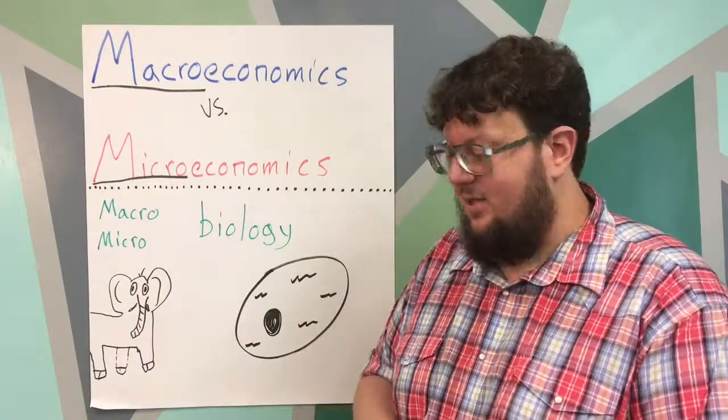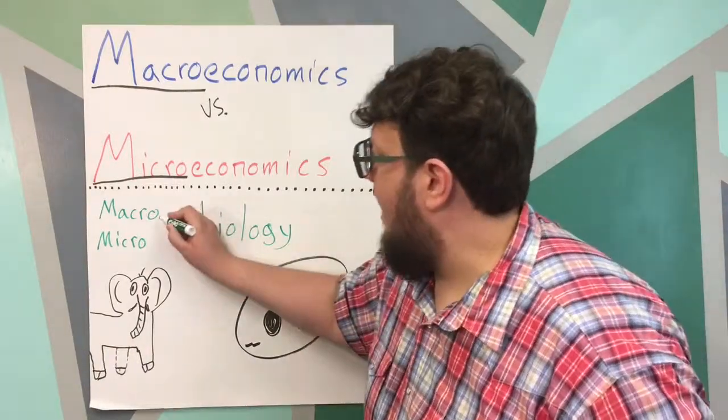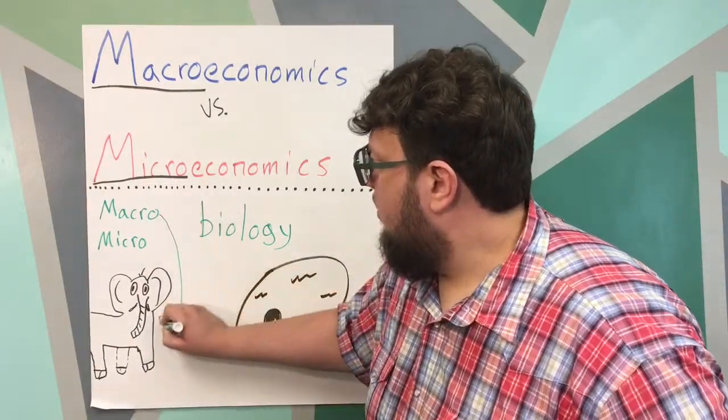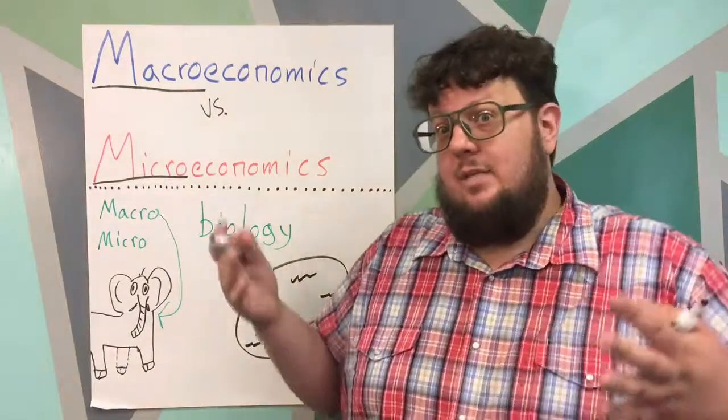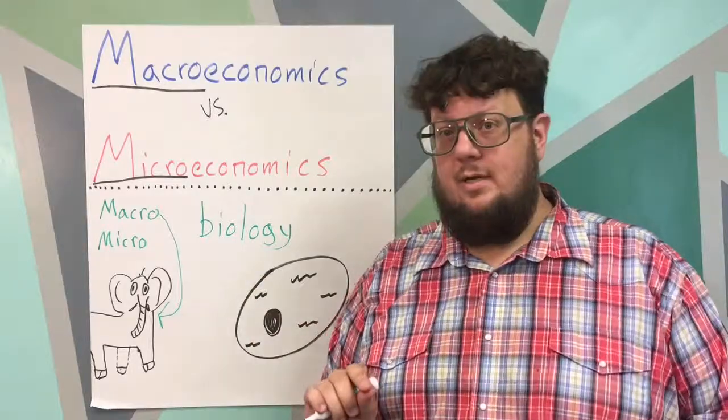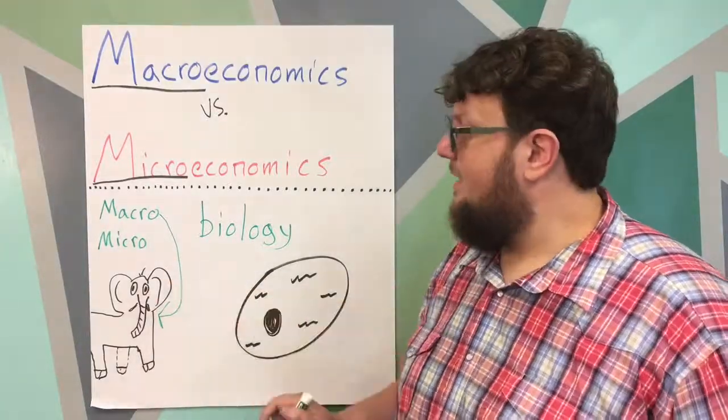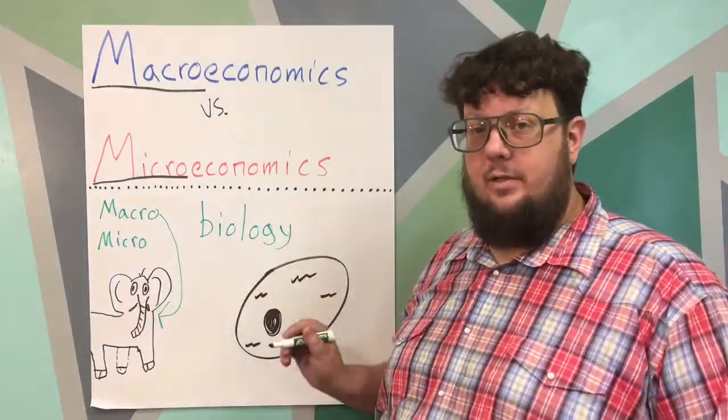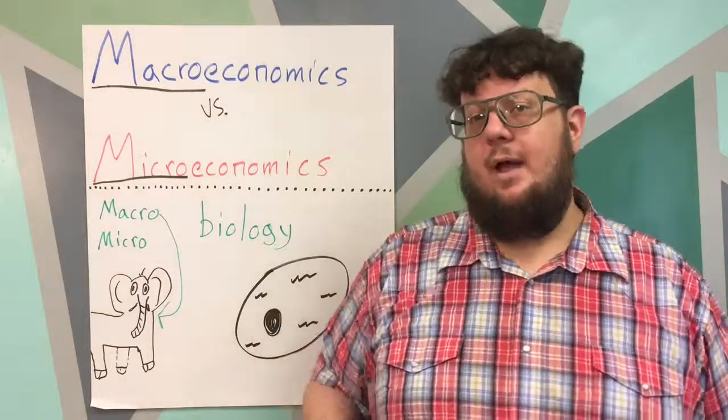If you said Tusco you are correct because macro is to do with large things and we can see Tusco. We can touch him if he's friendly. We can ride him if he's in a circus. So Tusco is macro biology. If you're studying elephants you're studying macro biology.